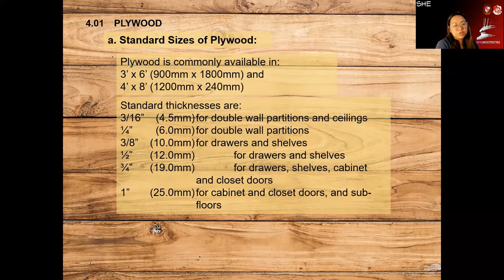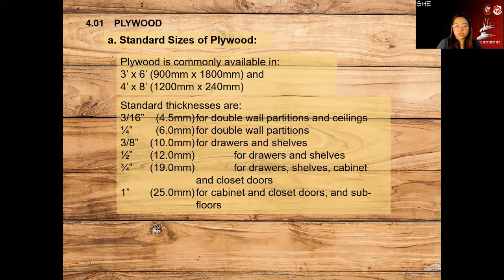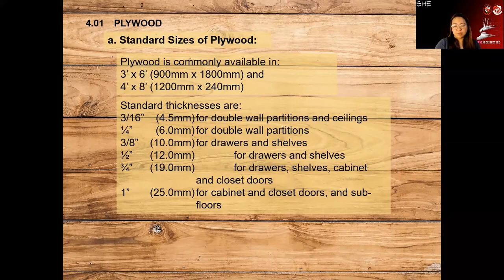There are different thicknesses of plywood. The thinnest is 3/16 inch, used for ceilings or double wall partitions on both sides. Then 1/4 inch, also okay for double wall partitions. 3/8 inch is usually used for drawers and shelves. 1/2 inch again for drawers and shelves. 3/4 inch is used in cabinets and closet doors — it's a bit thick. And 1 inch for cabinets, doors, and subfloors — the thicker, the stronger.